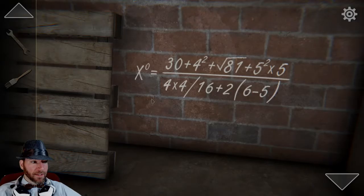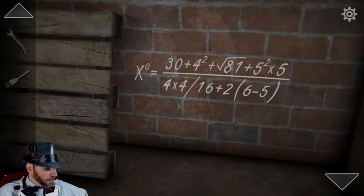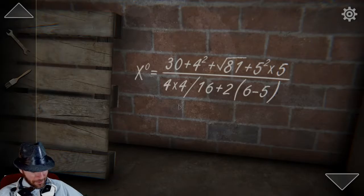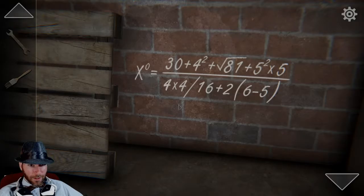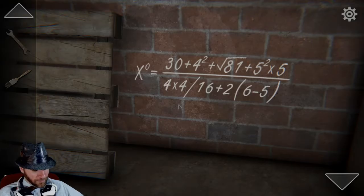What's funny is I can solve this. Unfortunately — oh no, that's just the soup. You know what? For fun, let's see if I remember algebra. I'm just gonna write all this down. 30 plus 4 squared plus square root of 81 plus 5 squared times 5, all over 4 times 4 over 16 plus 2.